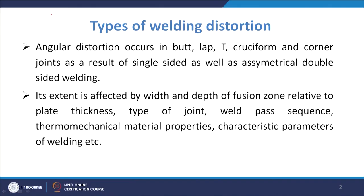Welcome to the lecture on Angular Distortion in Welds. We talked about longitudinal as well as transverse shrinkages, and now we will have some description about angular distortion in welds. Angular distortion occurs in butt, lap, T, cruciform, and other joints like corner joints, as a result of single-sided as well as asymmetrical double-sided welding. In those cases you are likely to encounter angular distortion.